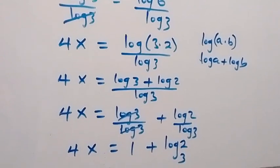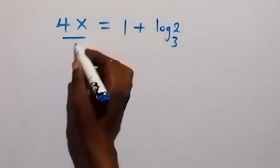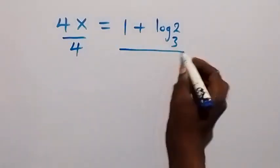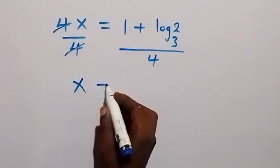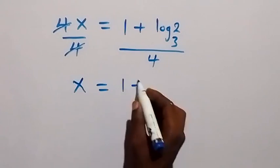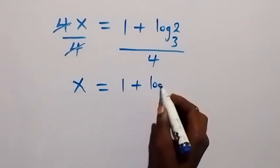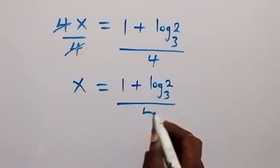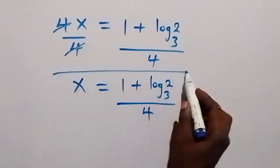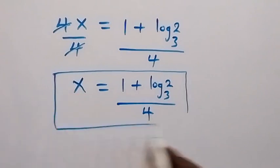Then we divide both sides by 4. Four cancels out, and we have x equals 1 plus log 2 base 3, all divided by 4. So the value of x equals 1 plus log 2 base 3, all over 4.